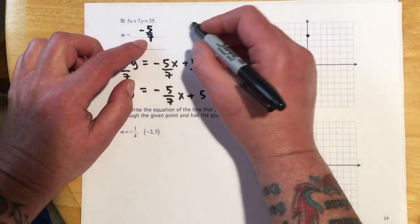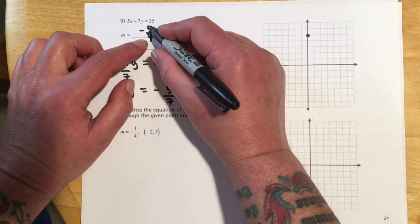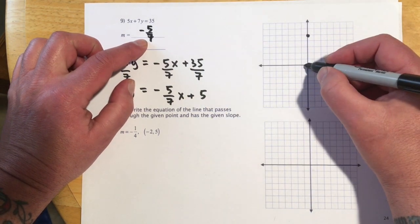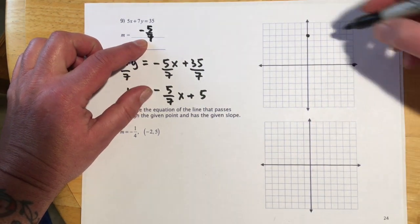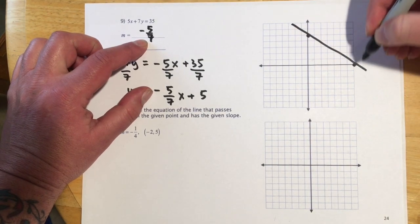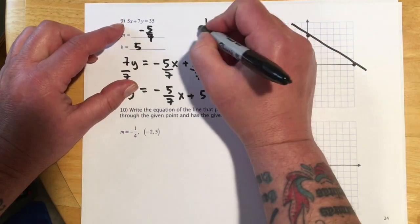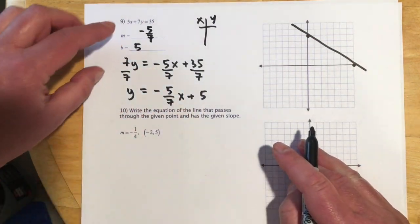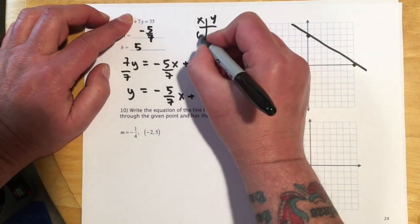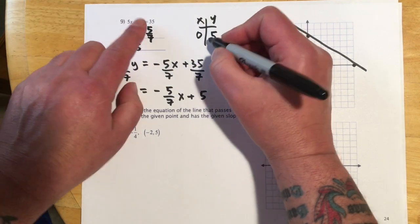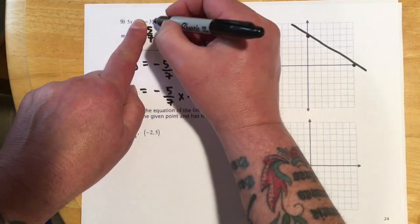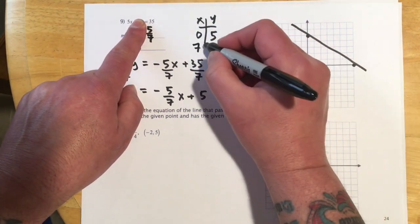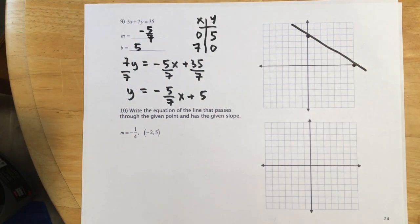And then we're going to, the rise is going to be 5, negative. And the run is going to be 7. And you could also just do, for graphing, I think it's actually easier. And I would check myself to make sure I didn't do something dumb here. But when x is 0, y is 5. And when y is 0, 5x equals 35. So this is 7. So to me, that's easier than using the slope.